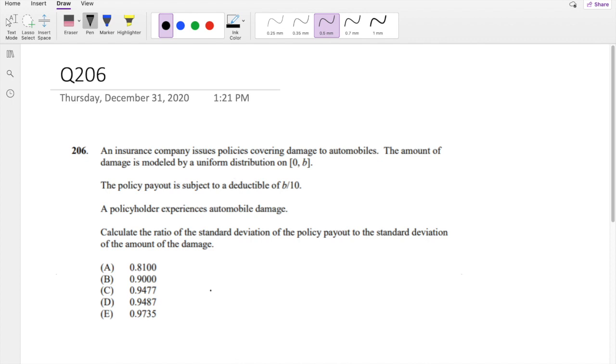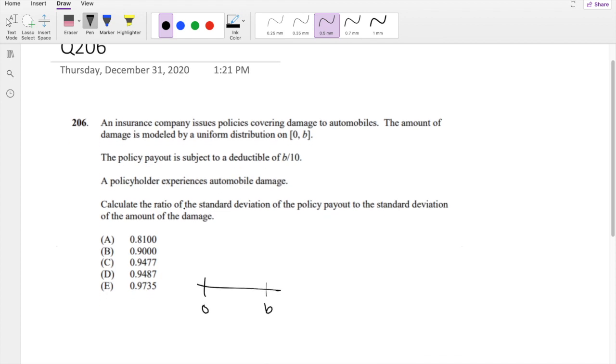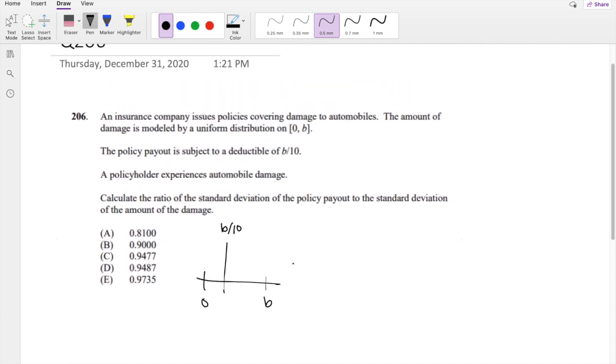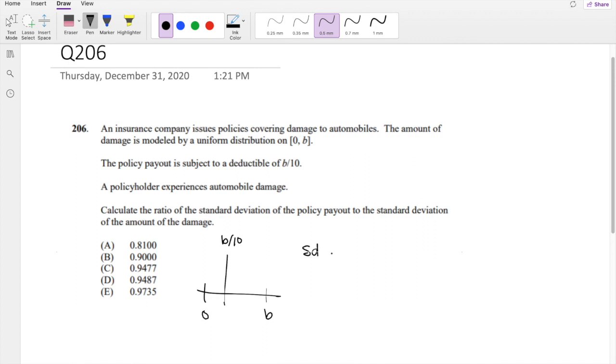So amount of damage modeled by uniform distribution is 0 to B. And we know the policy is subject to a deductible of B over 10. The policyholder experiences automobile damage, find the standard deviation of payout divided by the standard deviation of damage.